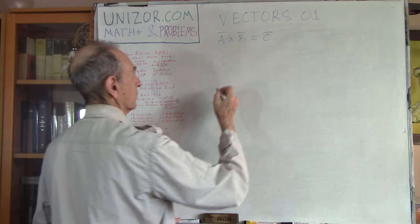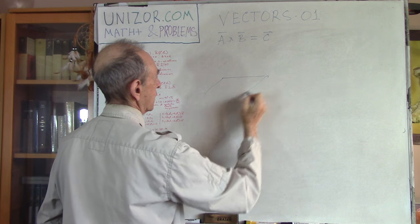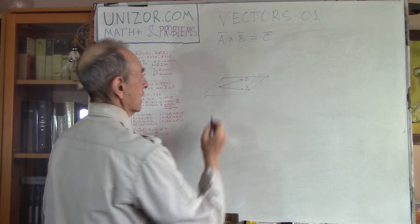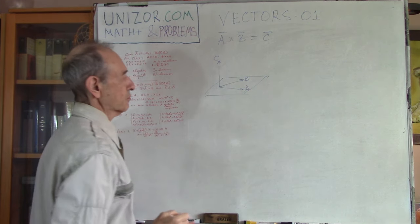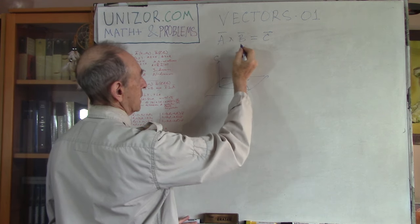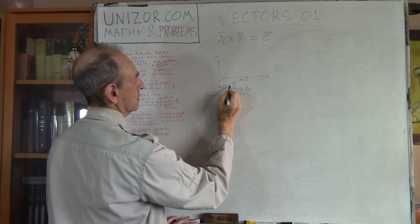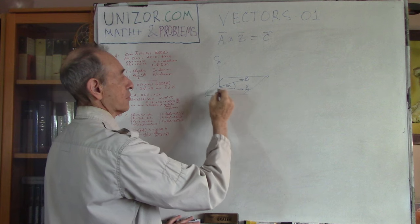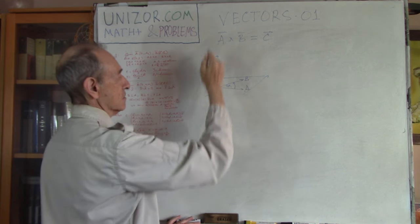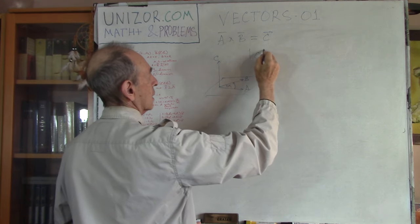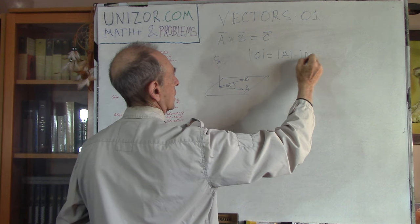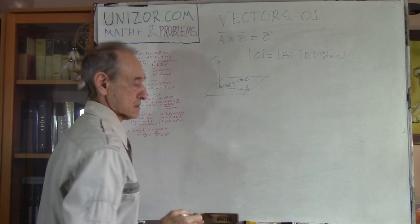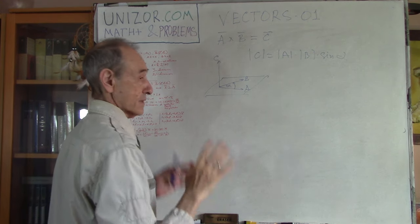What kind of vector? If A and B define a plane, then the result C is perpendicular to that plane. The direction is determined by the angle from A to B — following the right-hand rule or screwdriver rule. The magnitude is the product of the magnitudes of A and B times the sine of the angle alpha between them. That's the definition.